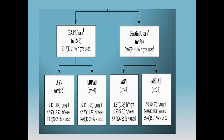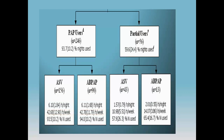The two groups are made up of 246 PAP users and 56 partial users. The ASV and ABPAP patients were using quite a bit — more than six hours a night — and often averaging close to 90% of nights or more. The partial users were averaging more in the 10 to 15 hours per week.